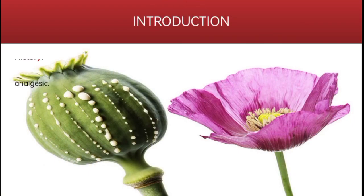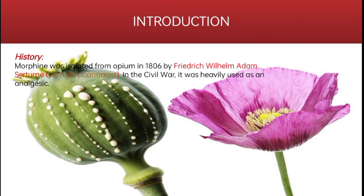Morphine was isolated from Opium in 1806 by Frederick Wilhelm Adam Sarchioun, who was a German pharmacist. In the civil war, it was heavily used as an analgesic.